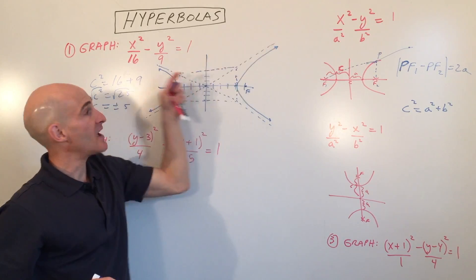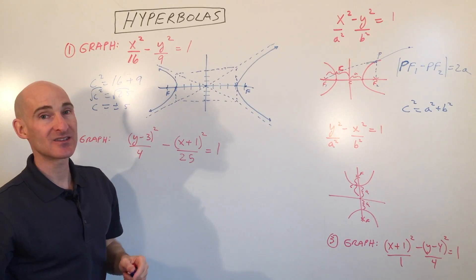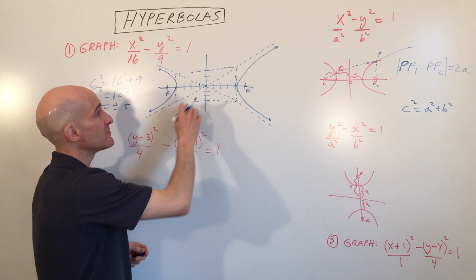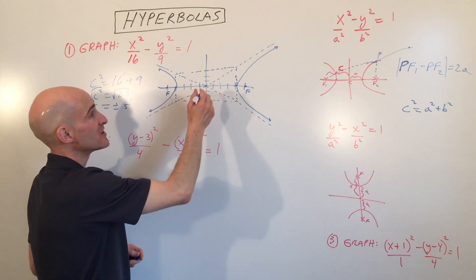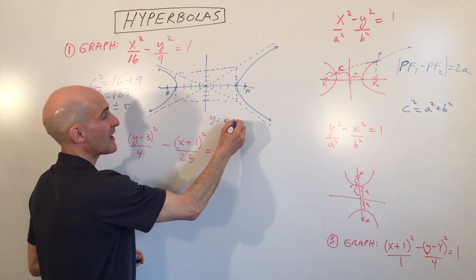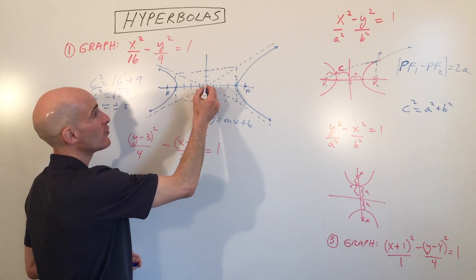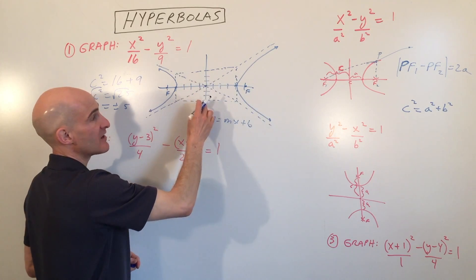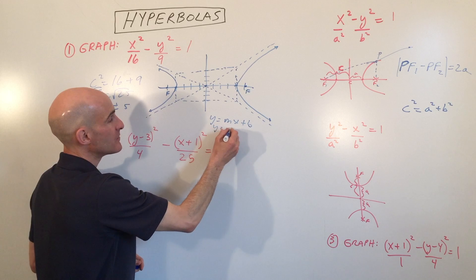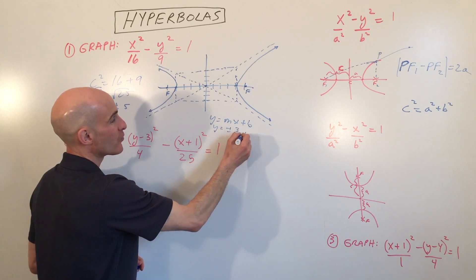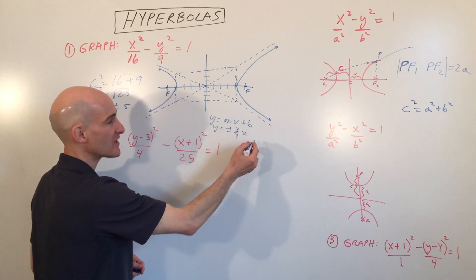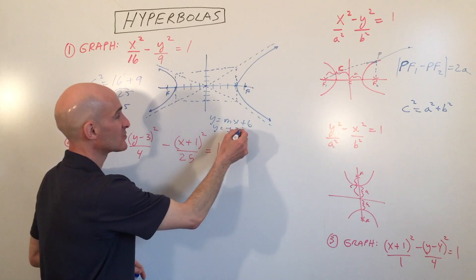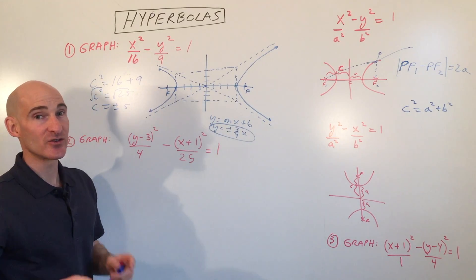The other thing we want to find are the equations of the asymptotes — these dashed lines that the graph approaches. This one is easy because the asymptotes go right through the origin, so we just find the slope using y = mx + b form. The slope is rise 3, run 4, and the other asymptote has a slope of negative 3 over 4, so the asymptotes are y = ±(3/4)x, since b is zero — they go right through the origin.